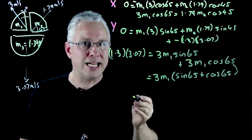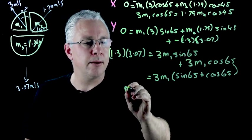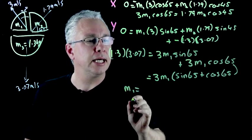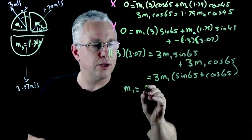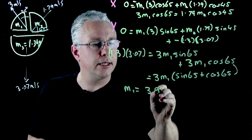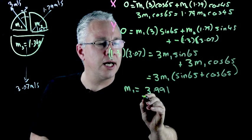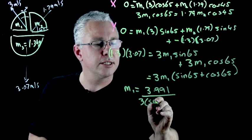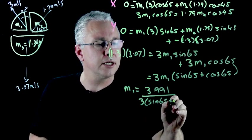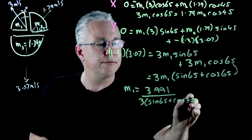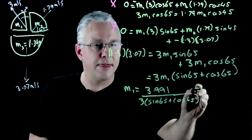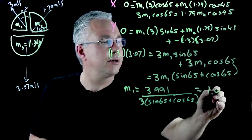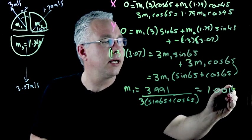Now remember we're interested in m1 so m1 ends up being equal to this value which is 3.991 divided by 3 outside of sine 65 plus the cosine of 65. And that gives us 1.001 kilogram.